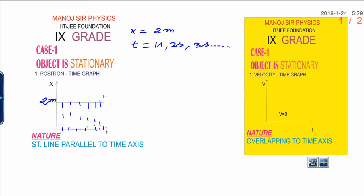This is the graph for what? When object is stationary. Nature of the graph is straight line, this straight line parallel to time axis.